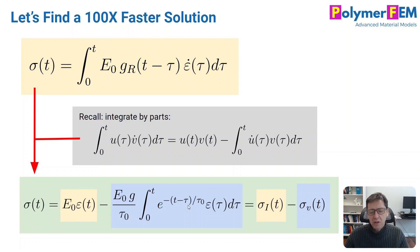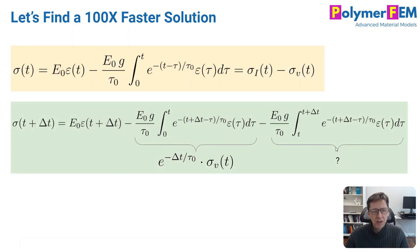So I can define, for simplicity, I'm going to call this yellow term the instantaneous response sigma i, and the blue integral here the viscous contribution sigma v. And the difference between them is the total stress. This is useful, perhaps, but it hasn't shown us anything about how we can solve this equation more effectively. We still have to do some other tricks to it. And here's what we do.